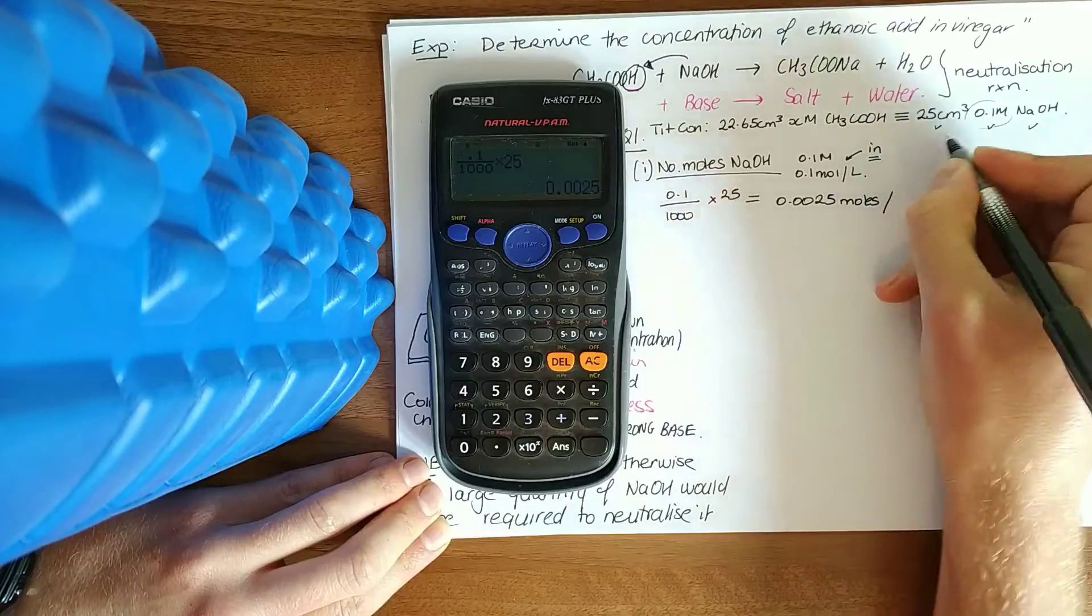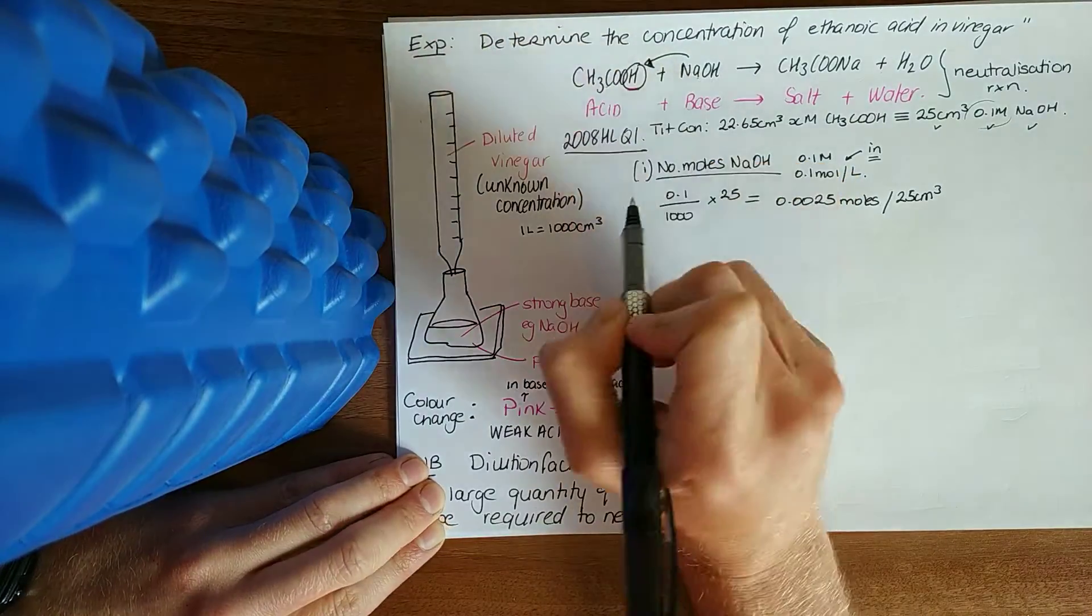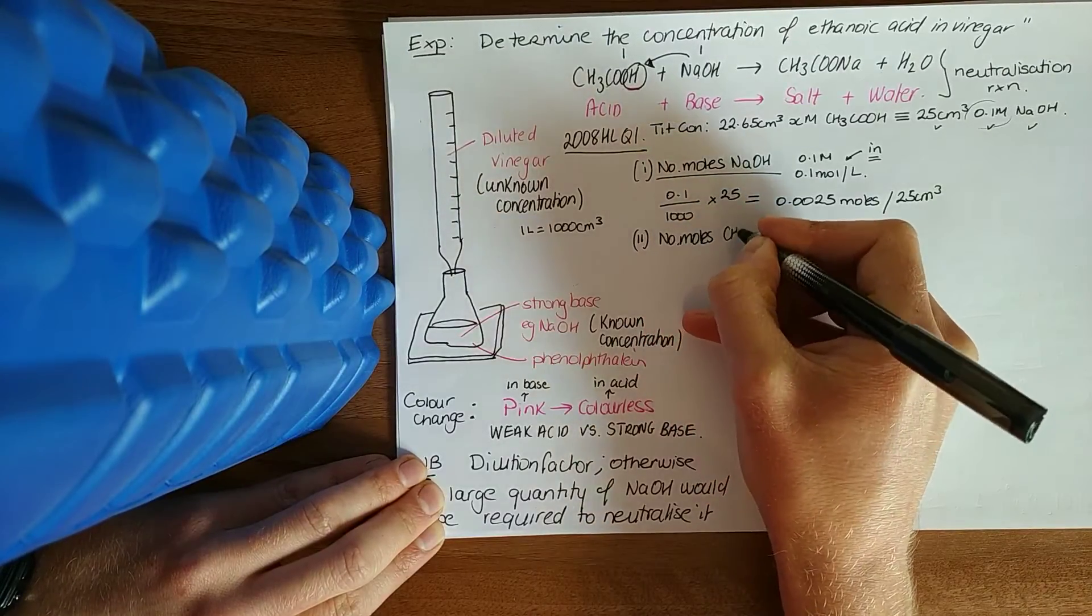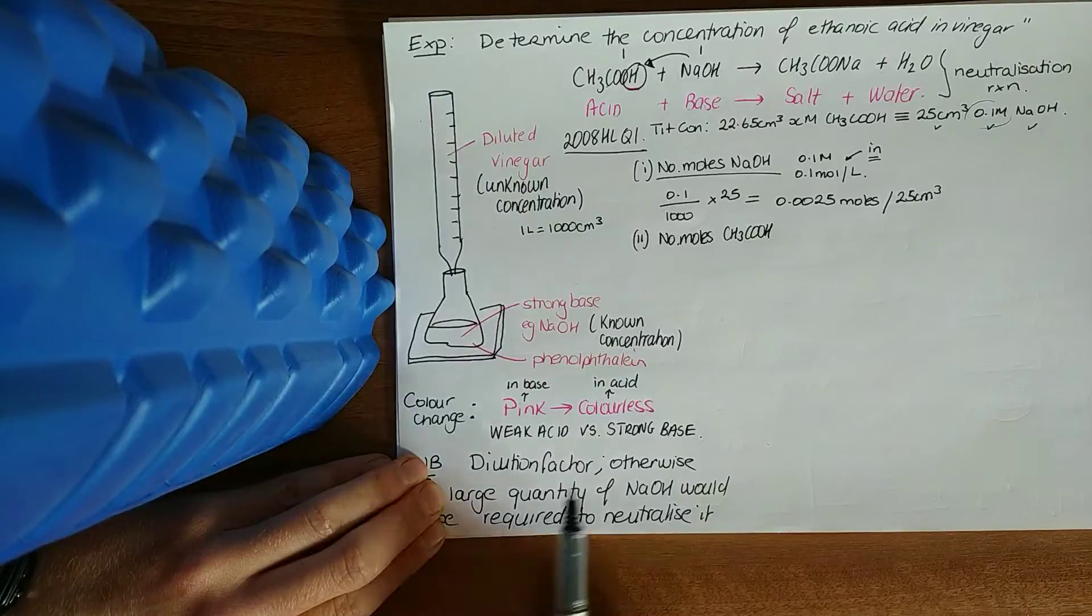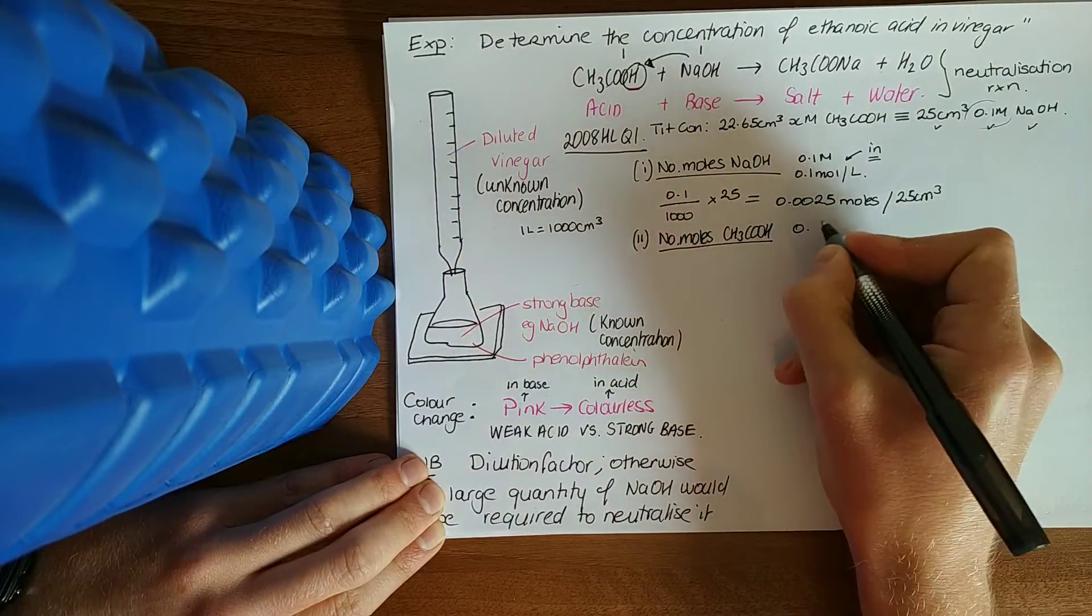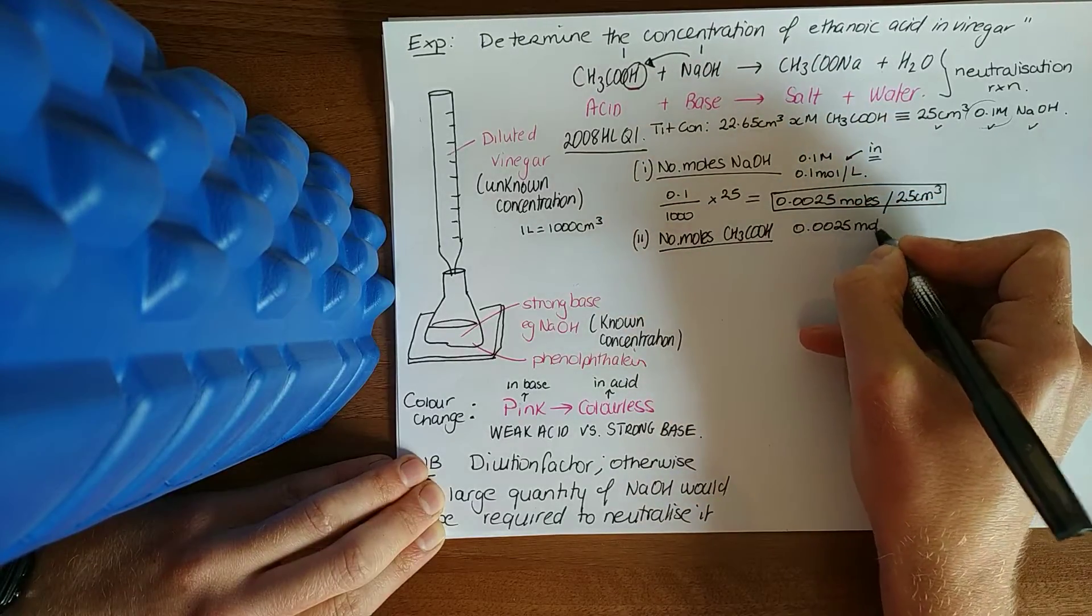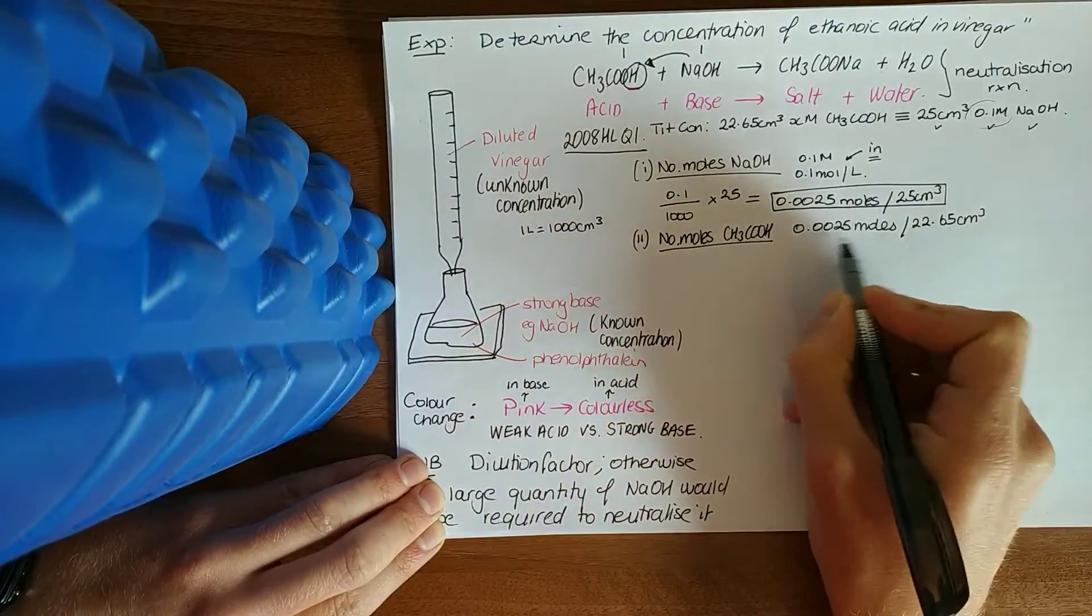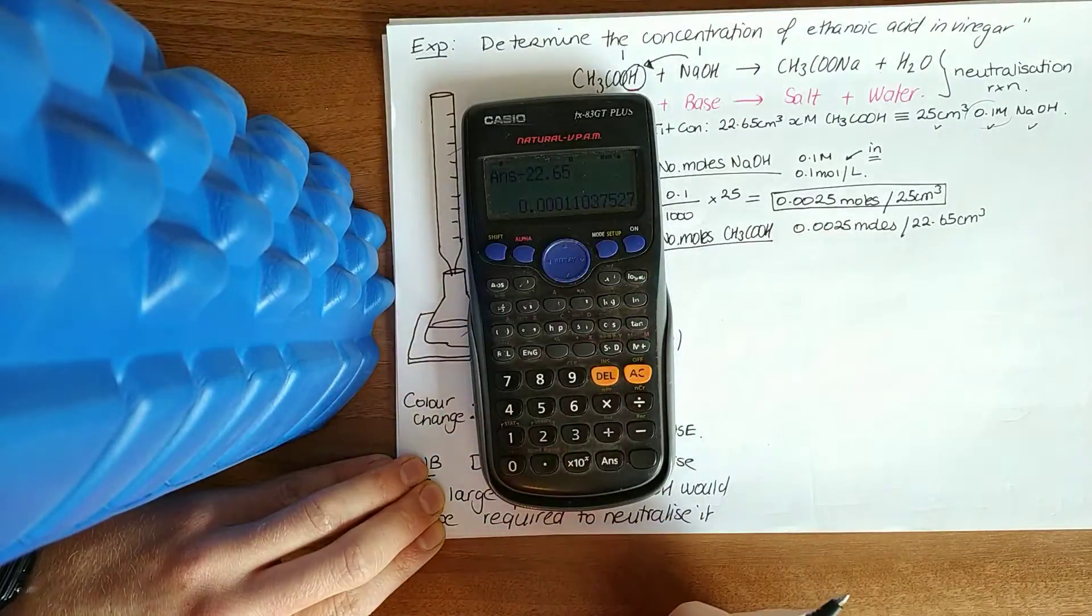Moles per 25 centimeters cubed. Next, like your stoichiometry, we can see the ratio of ethanoic acid to sodium hydroxide is one to one. I'll ask you for the number of moles of ethanoic acid, the number of moles per 22.65 centimeter cubed per titration figure. Since it's a one-to-one ratio, we know there's the same number of moles as this: 0.0025 moles per 22.65. If they ask you per centimeter cubed, that means in one centimeter cubed you simply divide by 22.65, getting 0.00011.